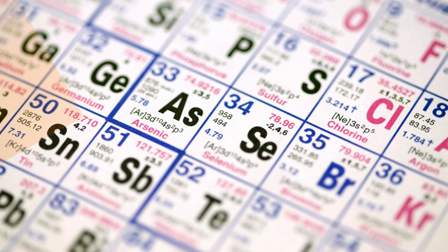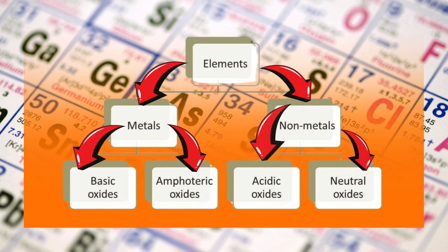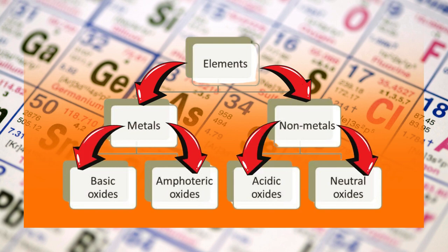Elements can be classified into metals and non-metals. Metal elements react with oxygen to form basic oxides and amphoteric oxides. Non-metal elements react with oxygen to form acidic oxides and neutral oxides.